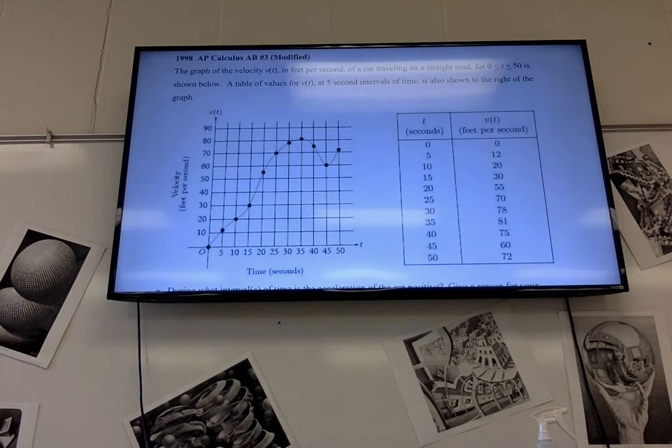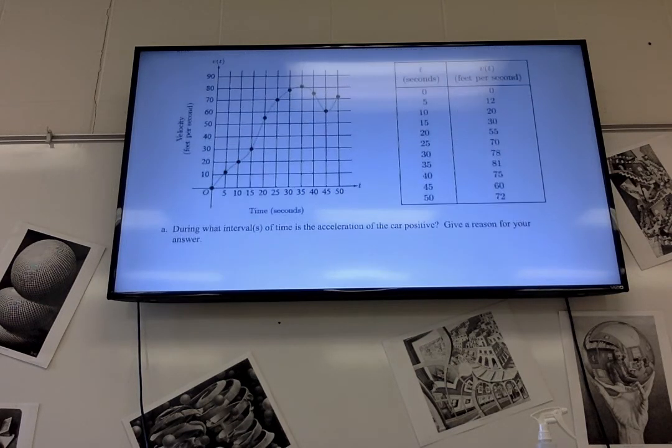Okay so this is an example of a free response question from 1998. Okay so the graph of the velocity V(t) in feet per second of a car traveling on a straight road for 0 to 50 is shown below and then a table of values at five second intervals of time is also shown. All right a during what interval or intervals of time is the acceleration of the car positive?